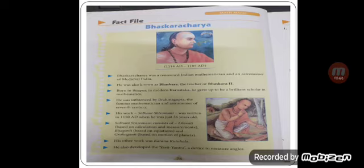Next is the fact file about Bhaskaracharya. He was a renowned Indian mathematician and astronomer. You have to go through the fact file also given in every chapter, because questions may be asked from these pages. He was also known as Bhaskara the teacher, or Bhaskara second.